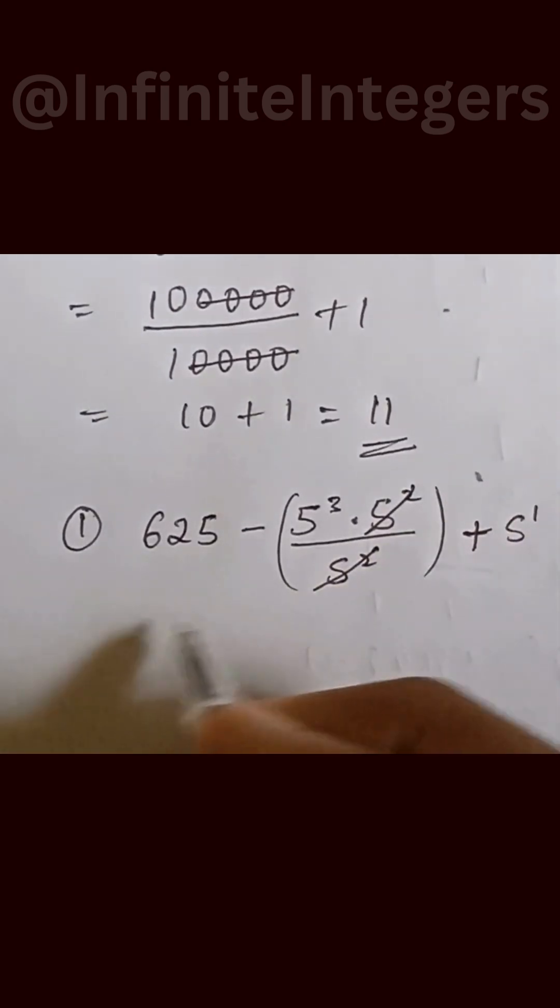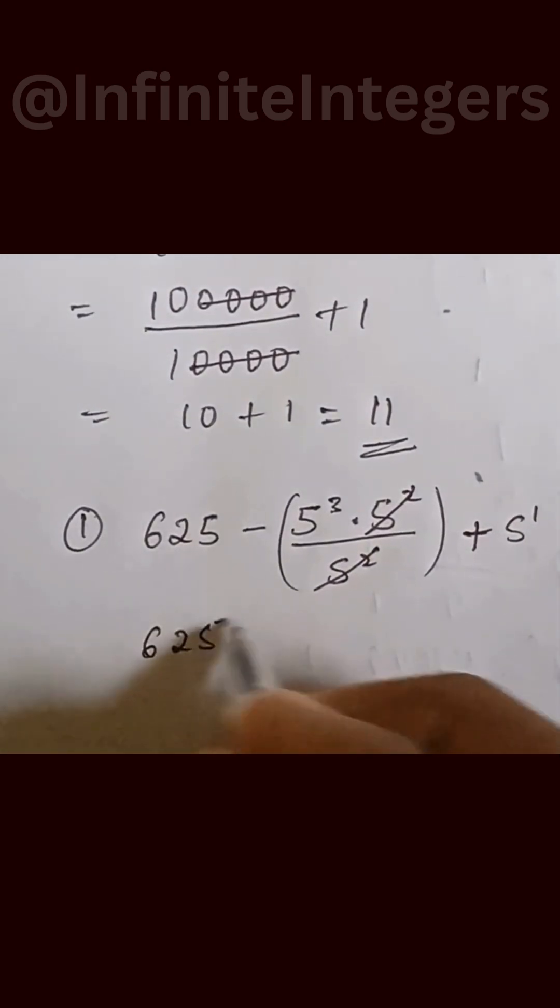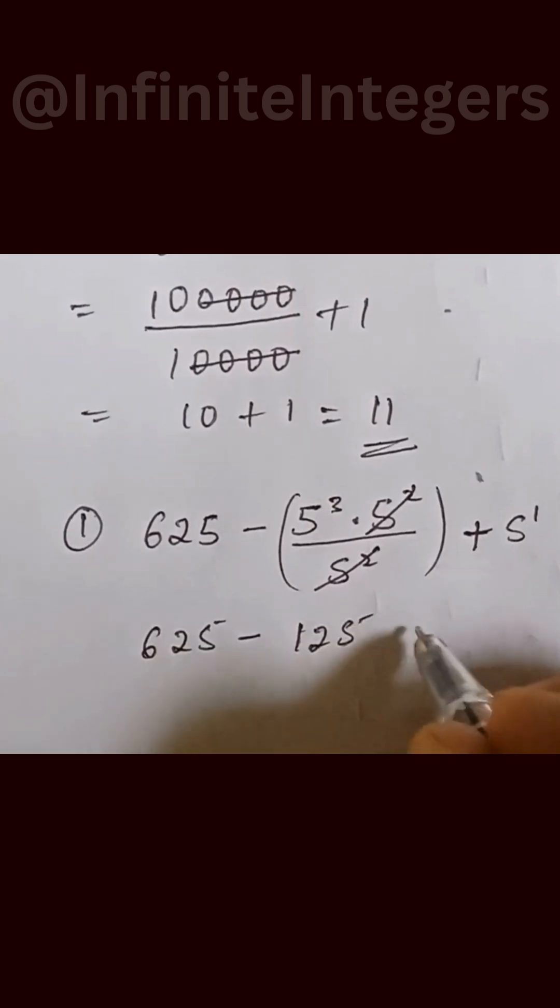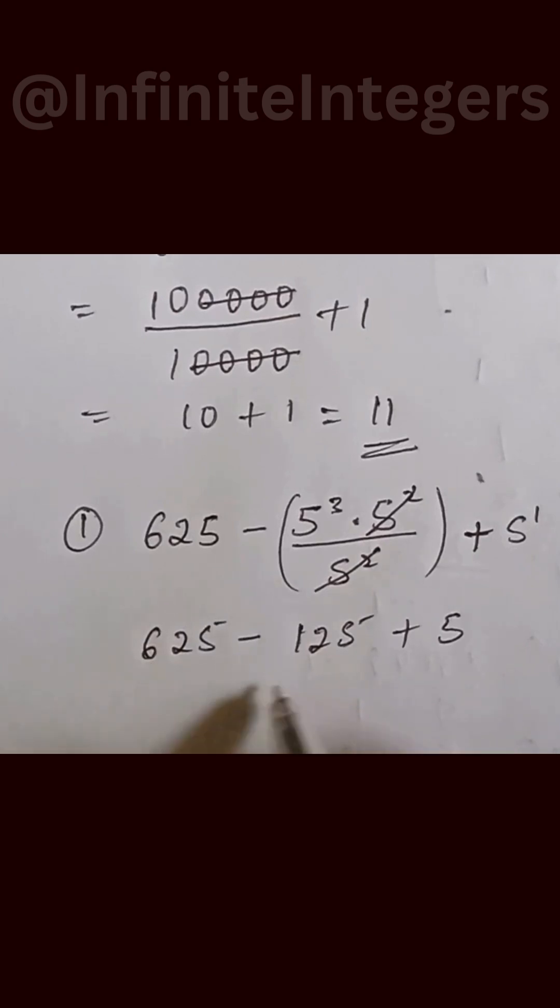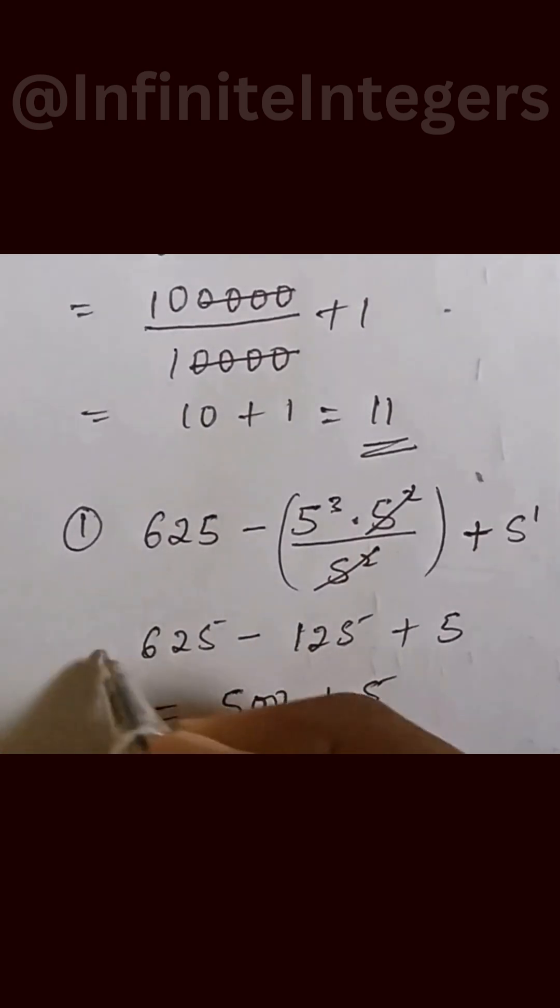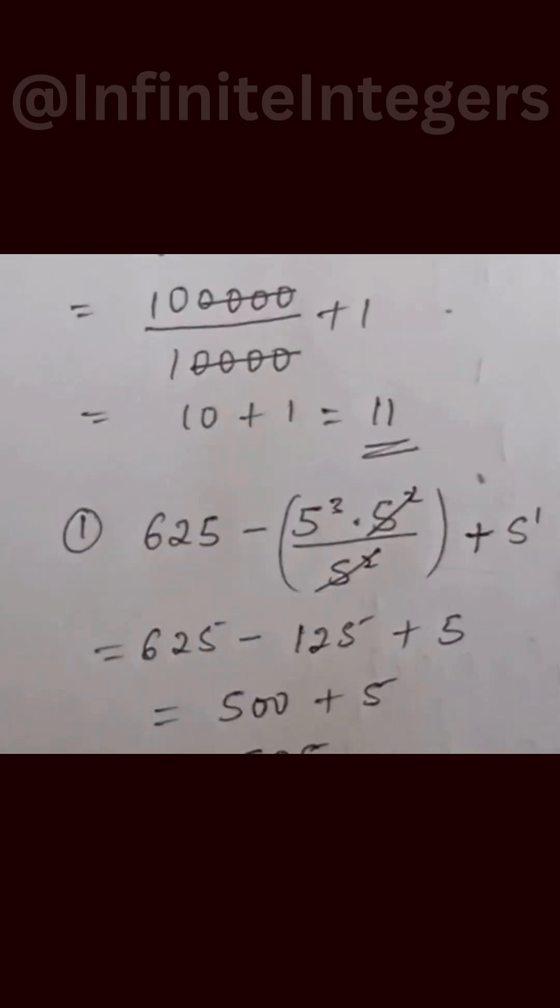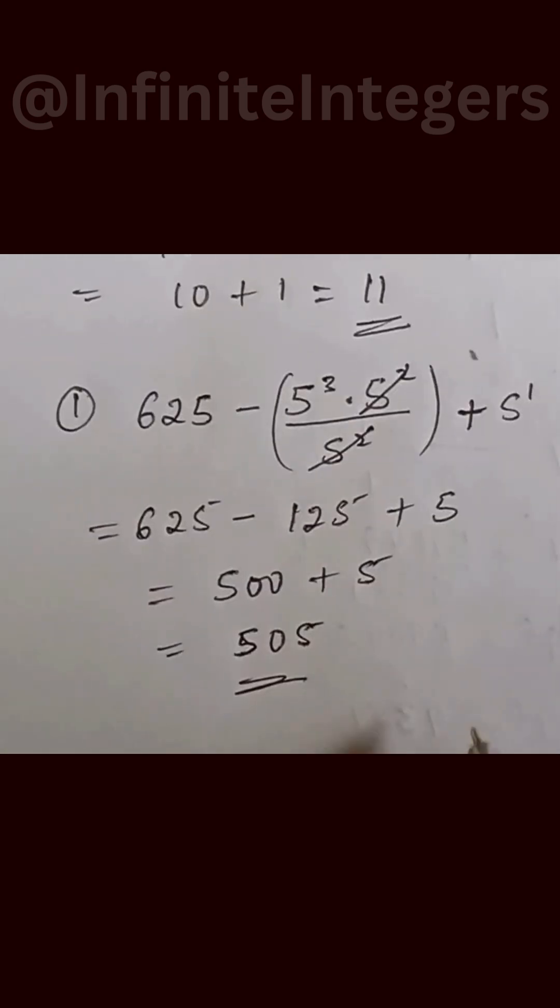So we have 625 minus 5 to the power of 3 is given as 125, plus 5. 625 minus 125 equals 500 plus 5, which is given as 505.